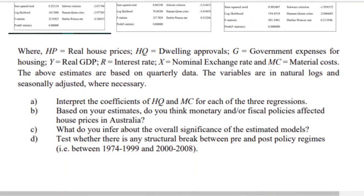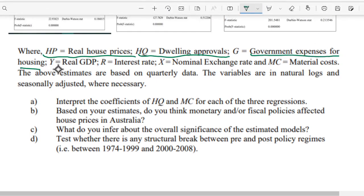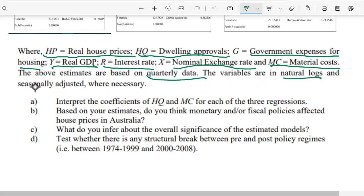The variables are: HP is the real household price, HQ is dwelling approvals, G is government expenses for housing, Y is real GDP, R is the interest rate, X is the nominal exchange rate, and MC is material costs. All variables are based on quarterly data, in natural log form, and are seasonally adjusted.